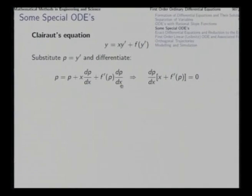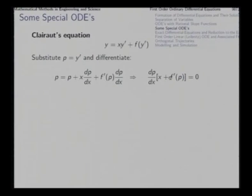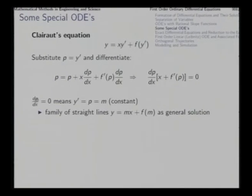Organizing the result, the two p terms cancel each other, leaving a product equal to zero: dp/dx·[x + f'(p)] = 0. Since this is a product of two terms equal to zero, either dp/dx = 0 or x + f'(p) = 0. Making dp/dx = 0 gives one kind of solution, and making x + f'(p) = 0 gives another kind. First consider the simple case: dp/dx = 0 means p is constant.